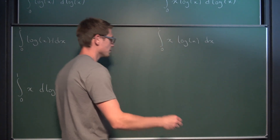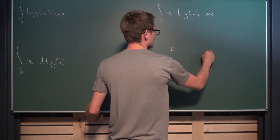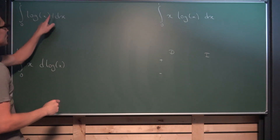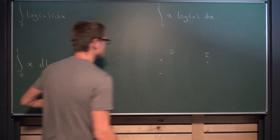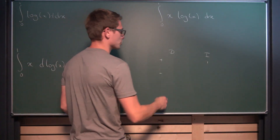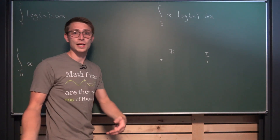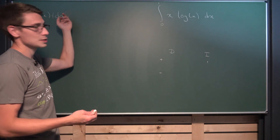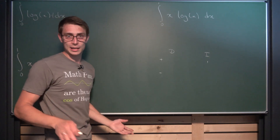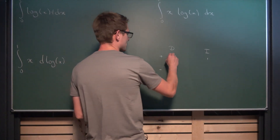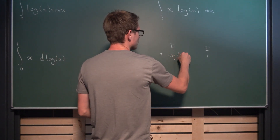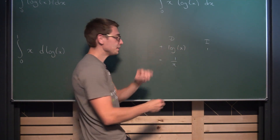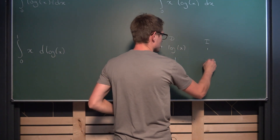Now we can use the DI method for integration by parts. We are going to integrate the 1 with respect to x and differentiate ln(x) with respect to x, because finding the differential of ln(x) is easier than finding the integral. The natural log of x differentiated is 1/x by definition, and integrating 1 yields just x.